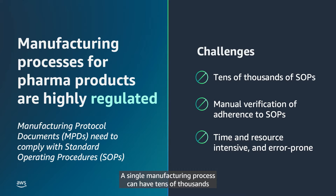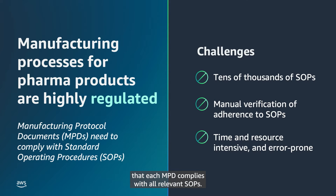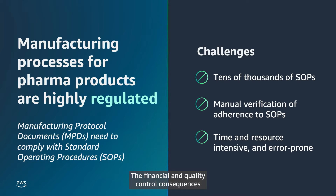A single manufacturing process can have tens of thousands of SOPs linked by an MPD, with multiple MPDs per manufacturing plant. Currently, quality teams have to manually ensure that each MPD complies with all relevant SOPs. This is a time, resource, and cost-consuming task that requires specialized regulatory and manufacturing execution knowledge. The financial and quality control consequences of an error can be enormous.